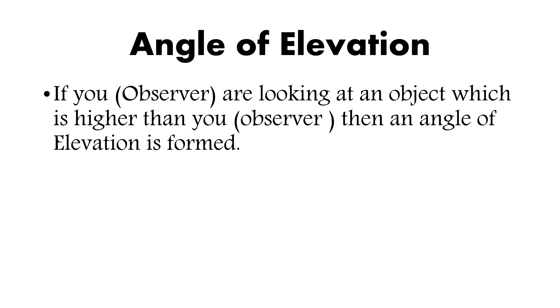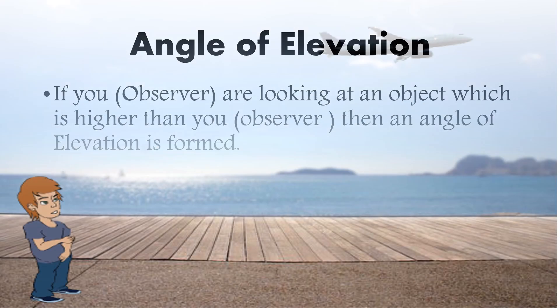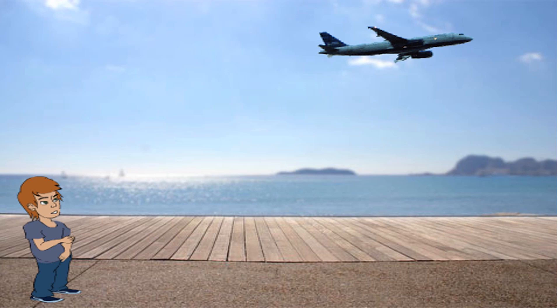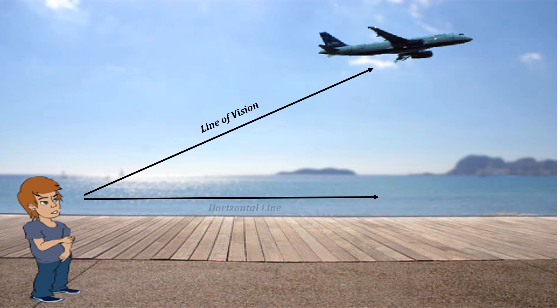We will try to understand angle of elevation with the help of an example. Look in the picture. There is a person looking at an aeroplane which is higher than him. The line from him to the aeroplane is known as the line of vision, and the line from him towards the object is known as the horizontal line. The angle formed by these two lines is known as the angle of elevation.